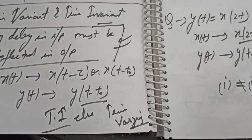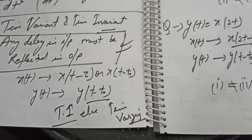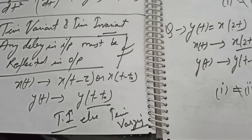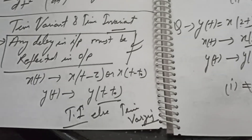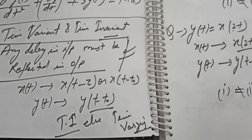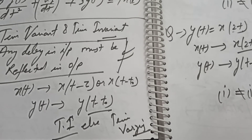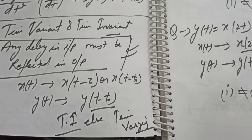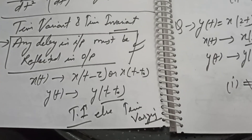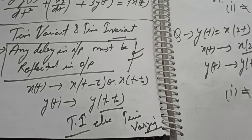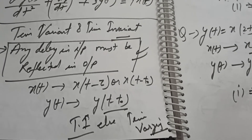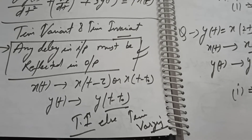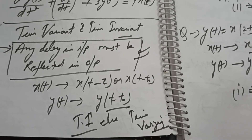Take an example: there are two people, one having an age of seven and another having an age of nine, so the difference between their ages is two. With time, the ages become ten and eight, then eleven and nine. The input — the ages — is varying, but the difference (the output) is fixed. So this kind of system is time-invariant; it doesn't have any impact of time.